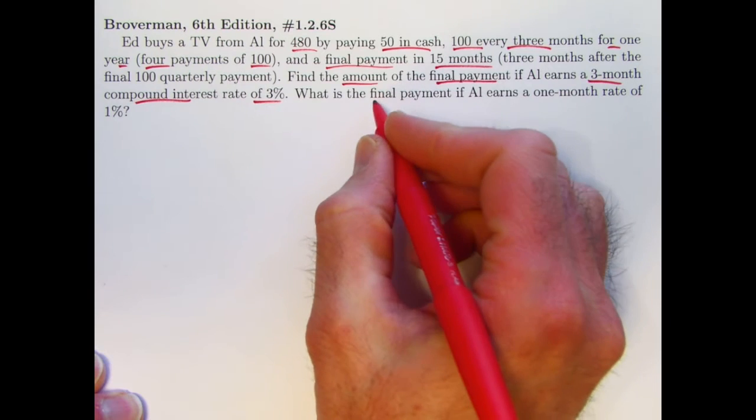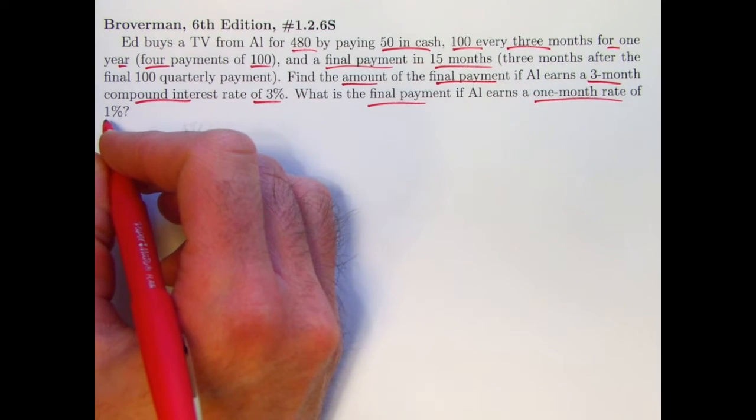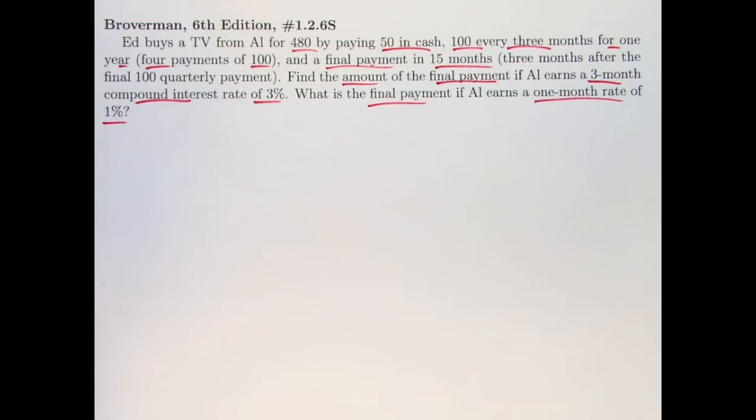And there's a second question here, also what is the final payment if instead the one month interest rate that Al earns is 1%.